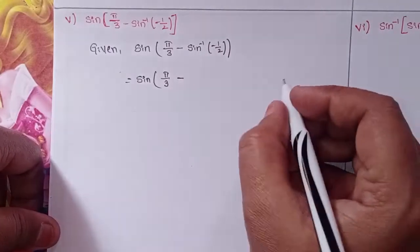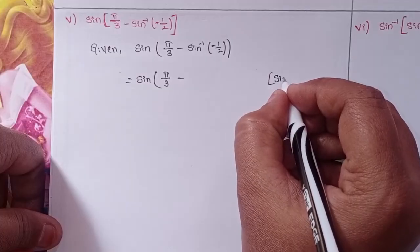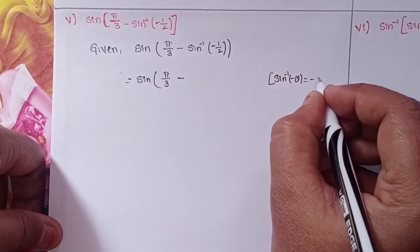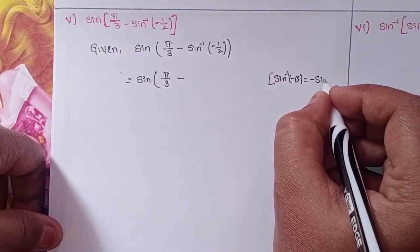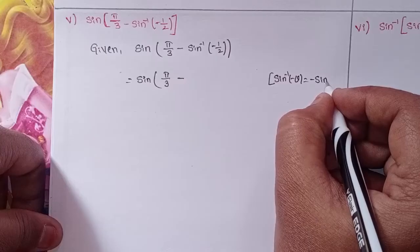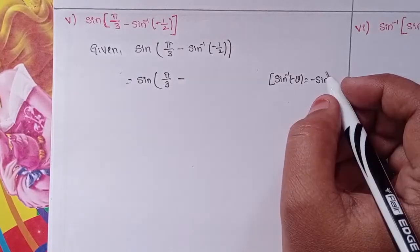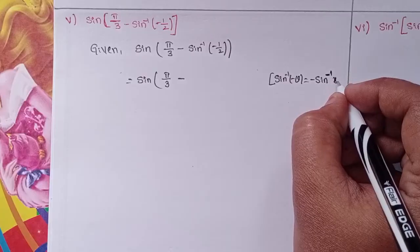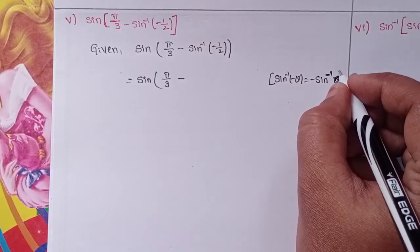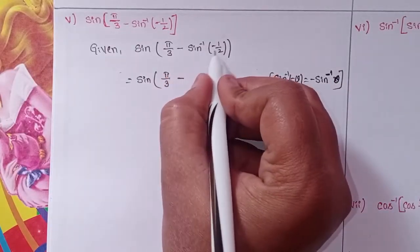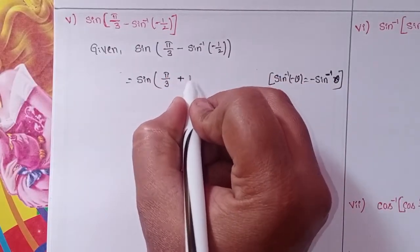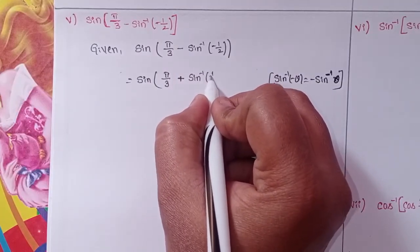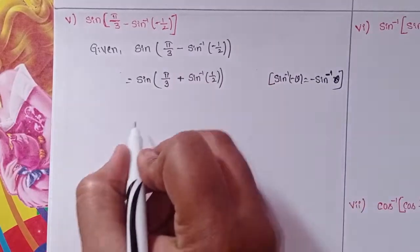Fifth one: sin inverse of minus theta is minus sin inverse theta. So minus into minus gives plus sin inverse of 1 by 2.